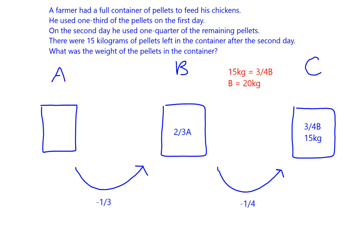We can add that information into our B container — B equals 20 kilos. Now we've got to work out how to solve the rest of it. We know that in B we've got two thirds of what we had when we started over here in A, so we can do something quite similar. Two thirds of what was in A — to find one third of A you divide 20 by two, which gives you ten kilos, and then multiply by three to give you the whole amount, which is going to be 30. So A equals 30 kilograms.